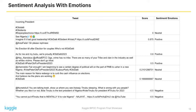A tweet or text can be considered a positive opinion if it expresses a favorable or optimistic sentiment towards a particular topic. Positive opinions in a text could include positive words, praise, recommendations, satisfaction, and emojis such as heart eyes, smiley, thumbs up, etc.